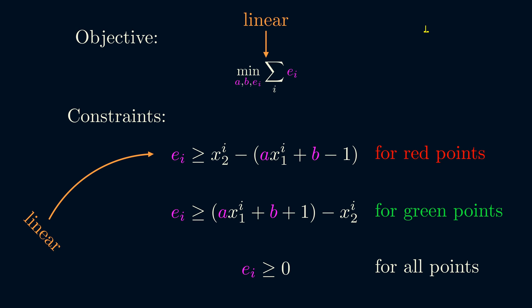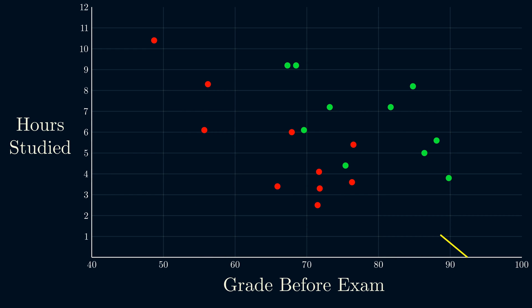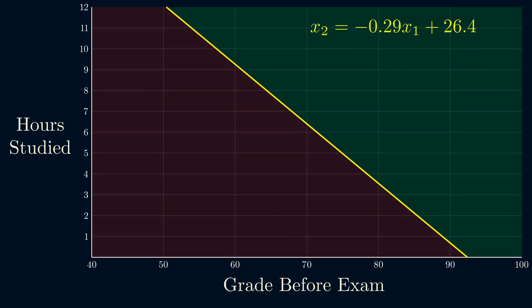If there are n points in our dataset, there will be n plus 2 variables and 2n constraints in our linear program. Solving this linear program returns this line as a solution. And here's the equation of the line. We can use this classifier to predict whether a student would pass or fail.